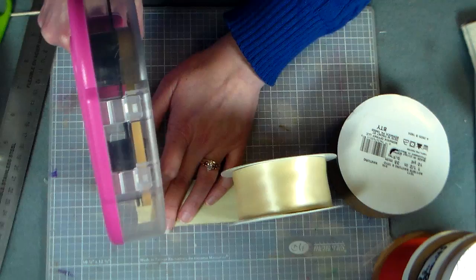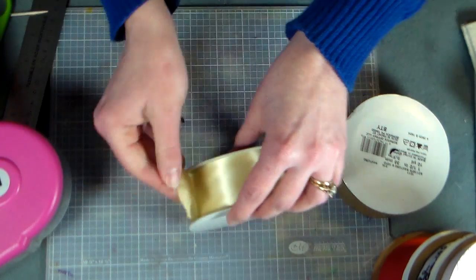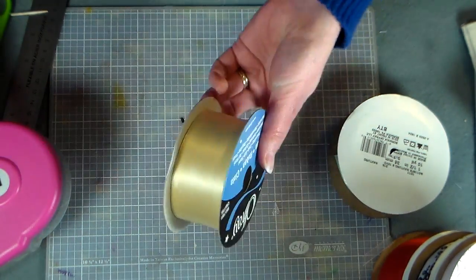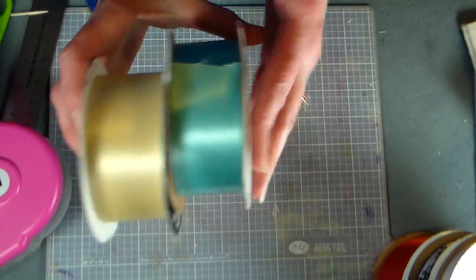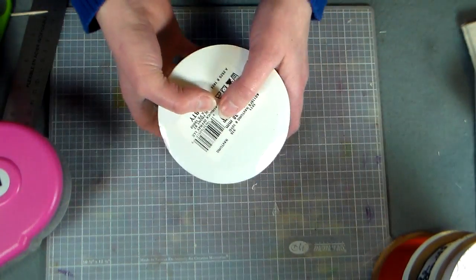Just put a little across the end of your ribbon roll and then tack it down and it's not going to unroll on you and you can keep them neatly on a shelf or in a box without any mess.